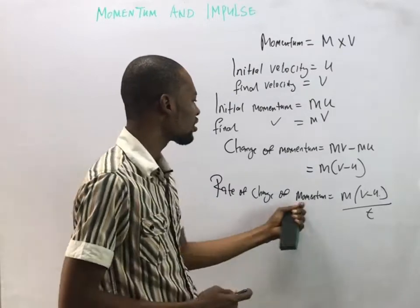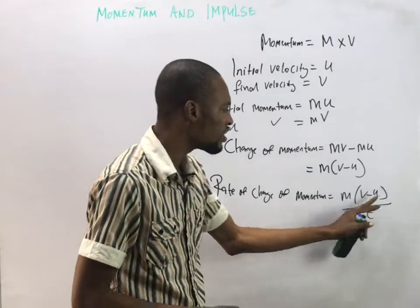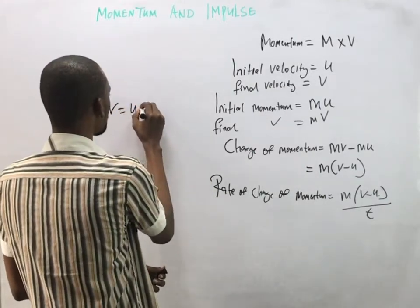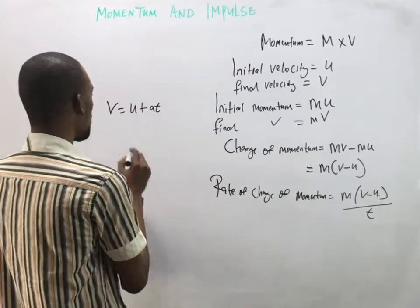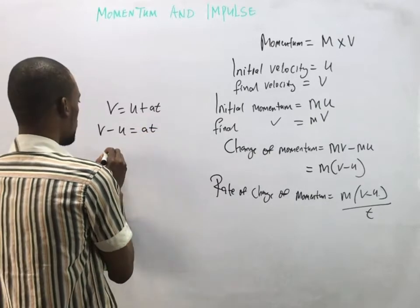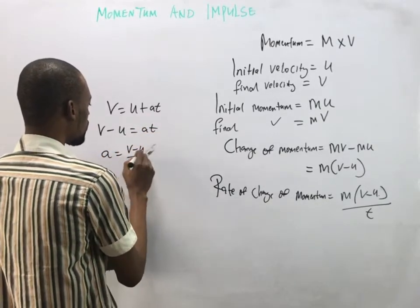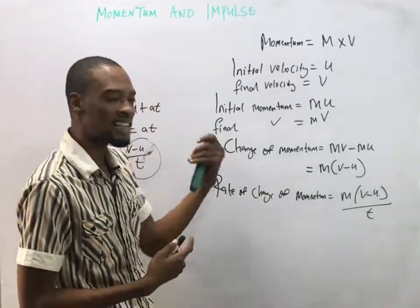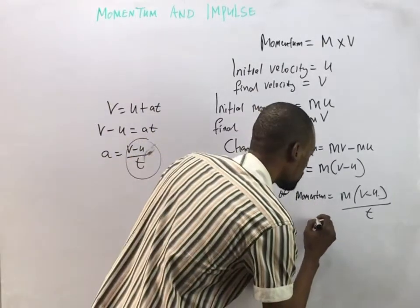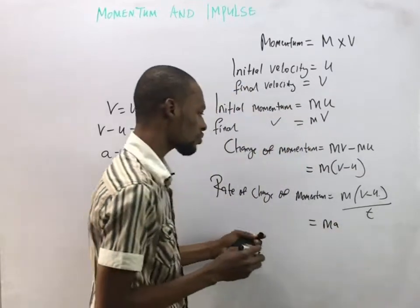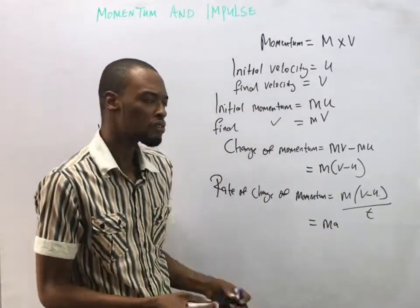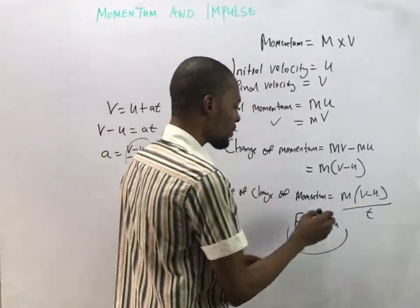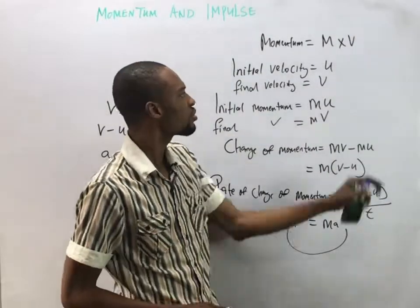Looking at this formula, v minus u over t is what? From the equations of motion, v = u + at, so v - u = at, which means a = (v - u)/t. Therefore, the rate of change of momentum equals ma. Since force acts in the direction of changing momentum, force equals ma — this is the proof that F = ma from momentum principles.